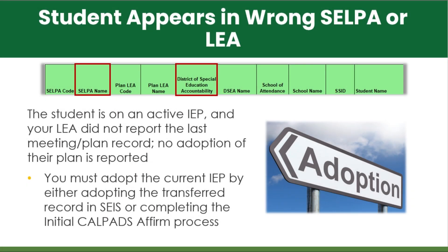Delay codes are populated on the CALPADS student page prior to affirming the meeting or creating the pending transaction. If the wrong SELPA or LEA is listed on the student record, you must submit an adoption transaction of the most recent IEP plan file.